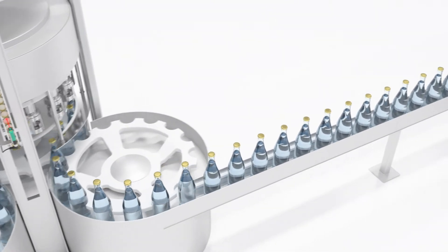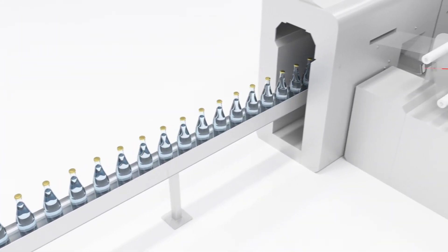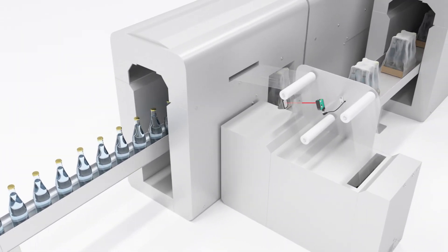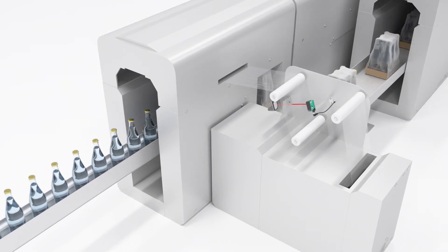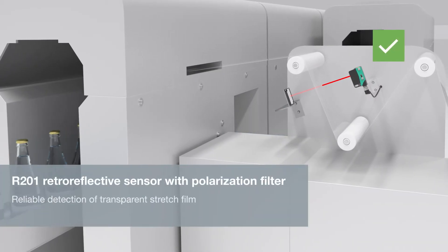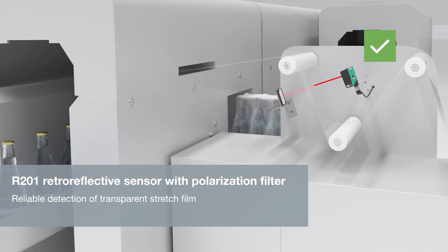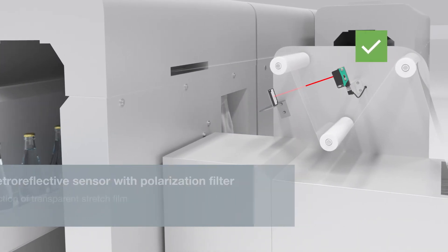The R201 also offers maximum reliability for detecting transparent objects. Thanks to the retro-reflective sensor with polarization filter, even transparent foils are no problem.